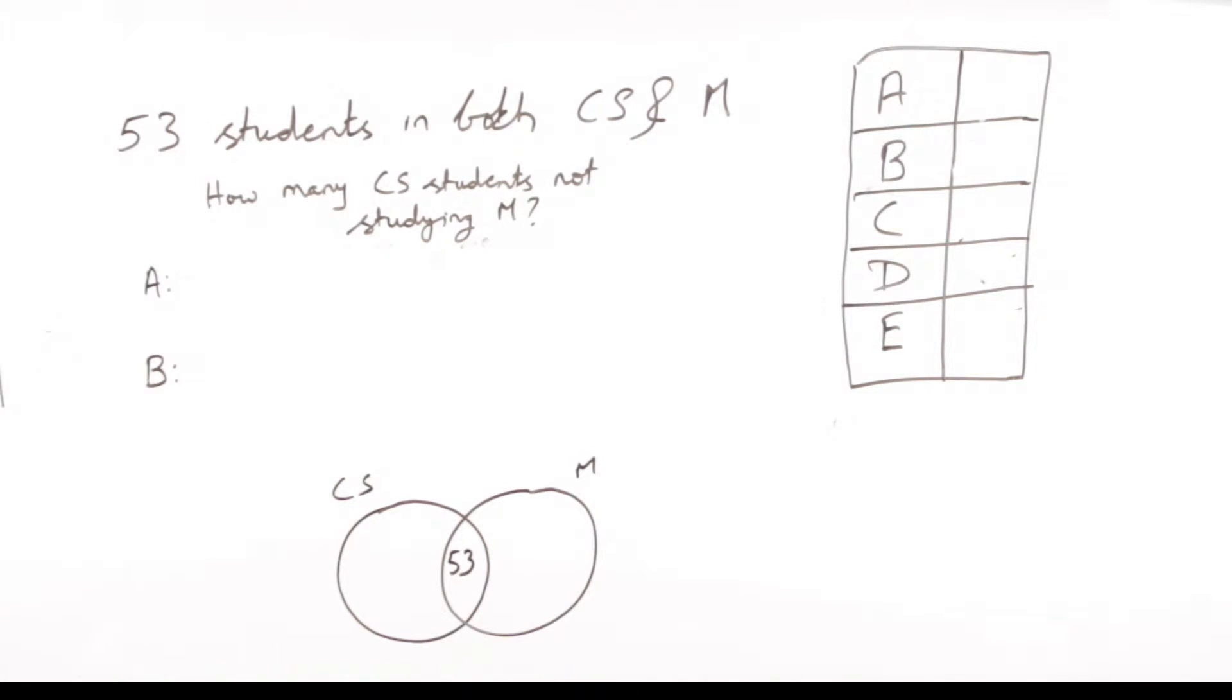We go to statement A. It tells us 72 students study mathematics. So basically, this tells us there are a total of 72 students who are studying mathematics, or mathematics and computer science both.